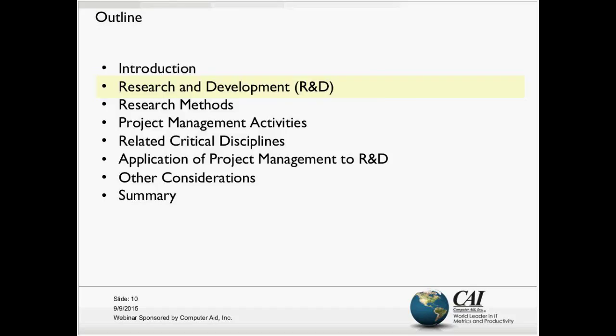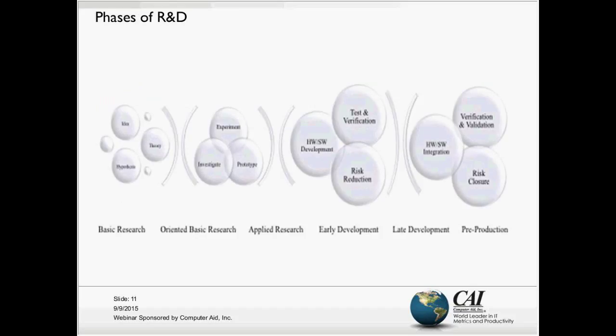The Frascati Manual notes that captured within the categories of the terms R&D are basic and applied research, development, demonstration, validation, engineering, manufacturing development, and operational systems development. Although it can be difficult to determine where the borders are between research and development per se, there is a continuum of work that's performed within these descriptions.